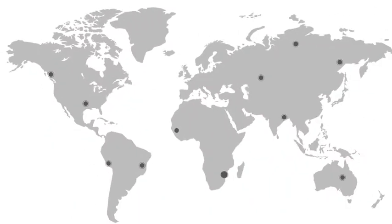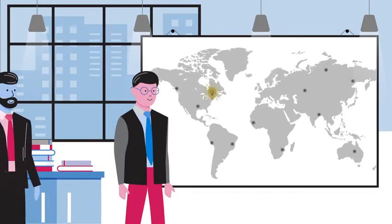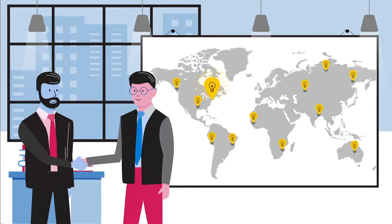Diversity and inclusion efforts can sometimes take place in silos. Directing them from the top as a strategic priority for the entire organization sets a consistent and committed tone. Appoint a dedicated diversity and inclusion leader reporting to the CEO to support this commitment.